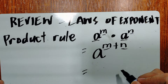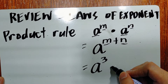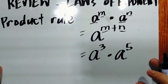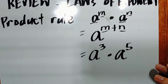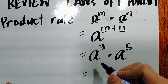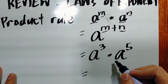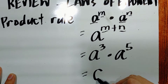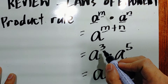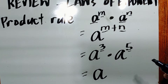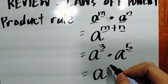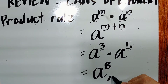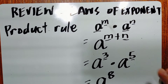For example, we have a raised to 3 multiplied by a raised to 5. The base is a times a, which is still a. For the exponents, we add them: 3 plus 5 is 8. So the answer is a raised to 8. That is the product rule.